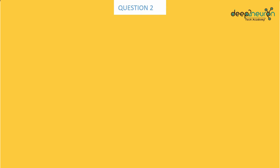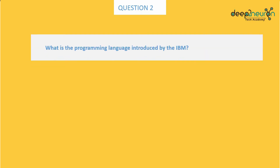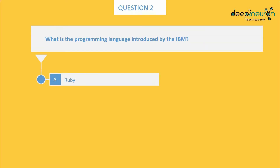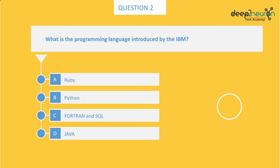Question number 2: What is the programming language introduced by IBM? Option A: Ruby. Option B: Python. Option C: Fortran and SQL. Option D: Java. The right answer is Option C, Fortran and SQL.